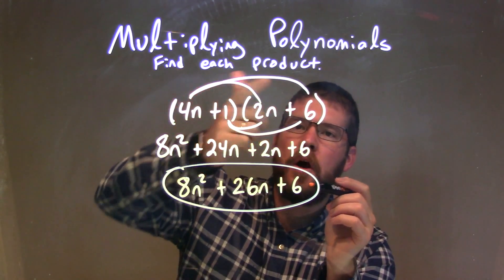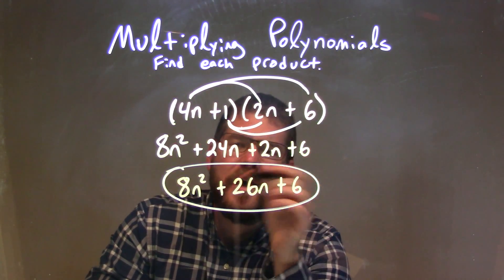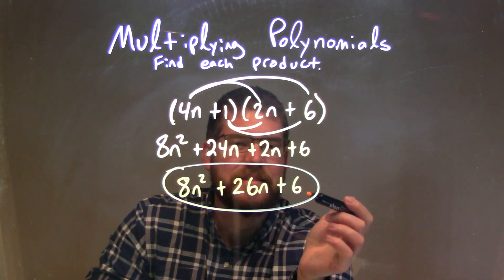I definitely recommend using FOIL, so make sure you've got all parts there. We combine our like terms to simplify, and our final answer here is 8n squared plus 26n plus 6.